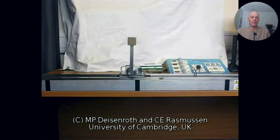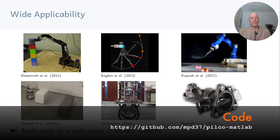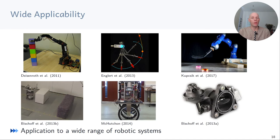This approach is fairly general and has been applied to a wide range of robotic systems: a cheap robot arm using visual feedback to learn to stack a tower of blocks, a tendon-driven robot arm that learns to hit table tennis balls, a robot arm that learns curling, a mobile platform navigating through a maze, a unicycle that learns to balance, and it has even been applied to controlling throttle valves in combustion engines.